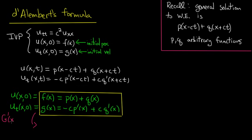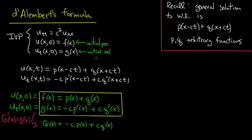We can choose a capital G such that capital G prime equals little g. There are many antiderivatives, but if we choose carefully, we can choose one such that capital G of x equals minus c p of x plus c q of x — essentially integrating both sides so that this antiderivative matches up with the antiderivative of the right-hand side. We replace the primed equation with this integrated version, which is excellent because we can now solve for p and q in terms of f and capital G.